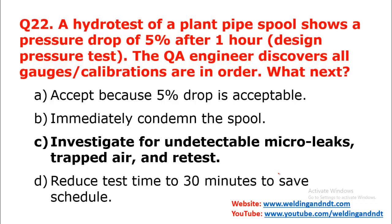If a 5% pressure drop has been observed, in most standards and codes, pressure drop is not at all acceptable — you cannot accept a 5% pressure drop. Hence Option A is not correct. Option B, immediately condemn the spool, is also not right, because first you should check why this pressure drop is happening.